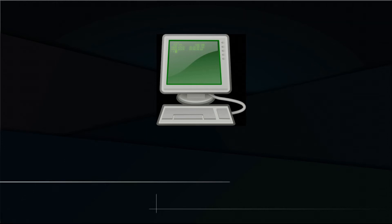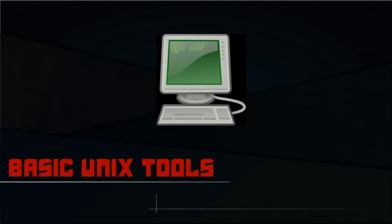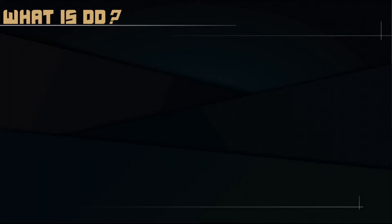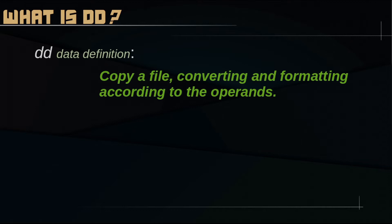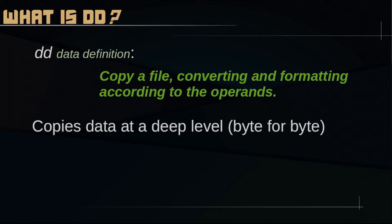Hey, welcome to this tutorial on basic Unix tools. Today we'll be looking at the basics of DD. So what is DD? DD stands for Data Definition and it's basically a very powerful command that lets us copy and manipulate data at byte level.